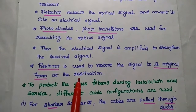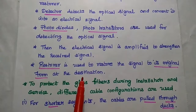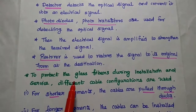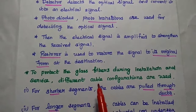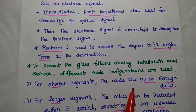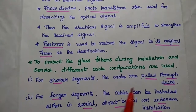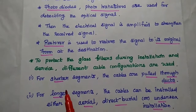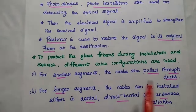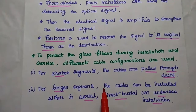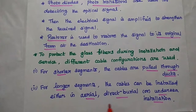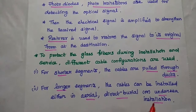We can receive the original signal at the destination with high accuracy. In this optical communication system, different cable configurations are used to protect the glass fibers during installation and maintenance. For shorter distances, the cables are pulled through ducts. For longer distances, the cables can be installed either in aerial, direct burial, or undersea installation.